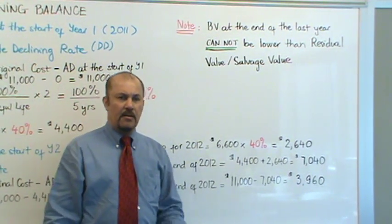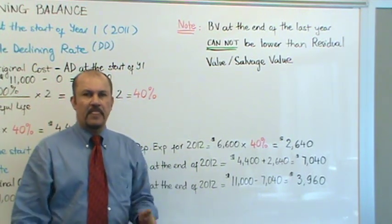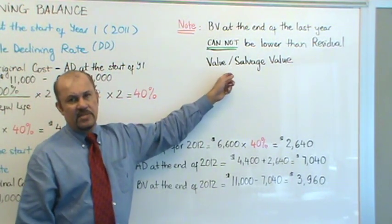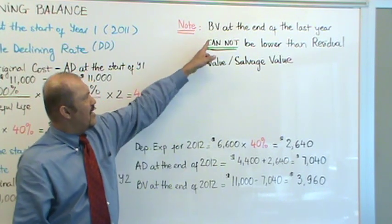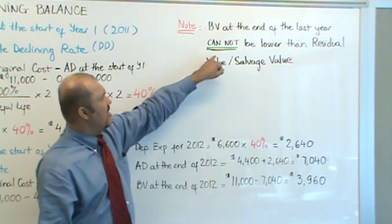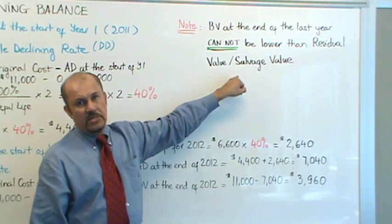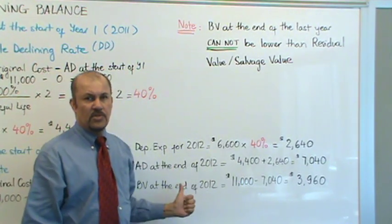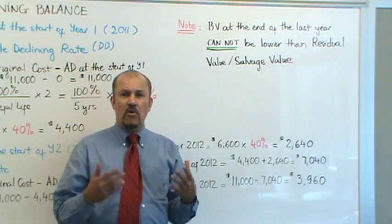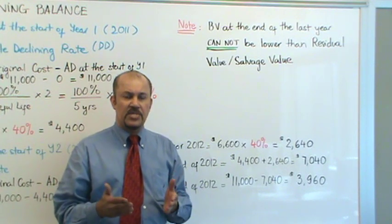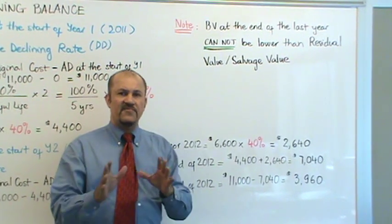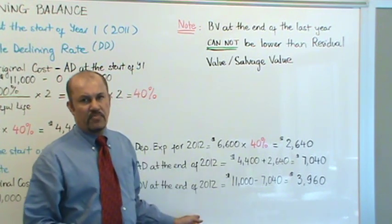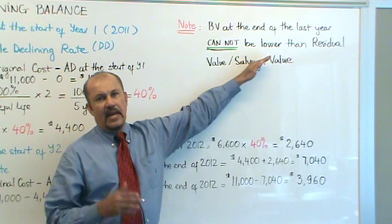You continue with these calculations for each successive year. When you get to the final year, however, there's a little twist. Here's a guideline to remember: the book value at the end of the last year, the final year, cannot be lower than your residual salvage value. Therefore, when you get to the final year of calculations, you may not be able to use the standard formula, because using that formula may cause your book value to go lower than the salvage value. You have to manually work out the depreciation expense for that final year rather than just applying the formula.